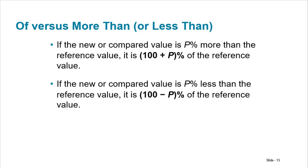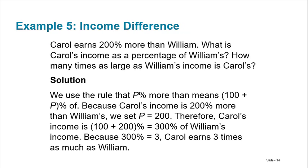This gets us to the idea of 'more than' and 'less than.' When we talk about P percent more than something, it's really just 100 plus P percent. When we talk about P percent less than something, it's 100 minus P percent — turning it into an 'of,' which means multiplication. So if you are 15% more than something, you're 115% of that thing. If you're 10% less than something, you're 90% of that thing.